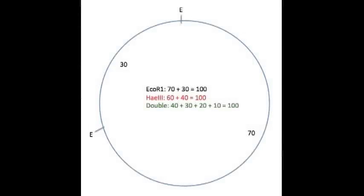There is another solution to this problem that makes only one cut in the larger 70 KB fragment and a second cut in the smaller 30 KB EcoRI fragment. See if you can figure it out.